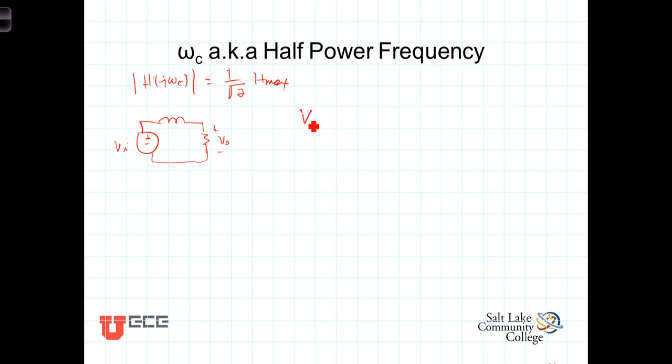Well, we know that power delivered to the load is equal to V squared over R. In general, power is equal to V squared over R. In general, power is proportional to V squared. So if the power in is proportional to V in squared, and the power out is proportional to V out squared, at the cutoff frequency, V out is equal to 1 over the square root of 2 times V in.